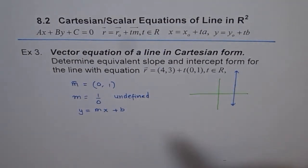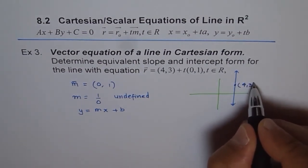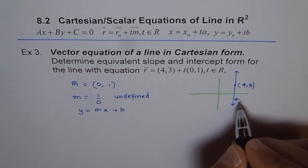And the point here is (4,3). So the x-value is 4. So what is the equation of this line?